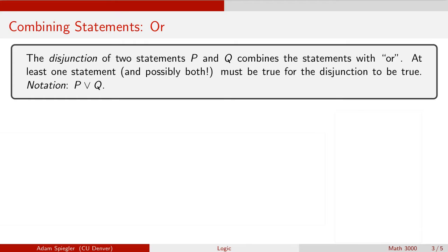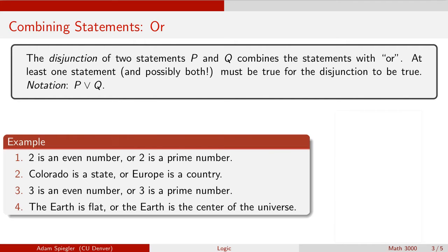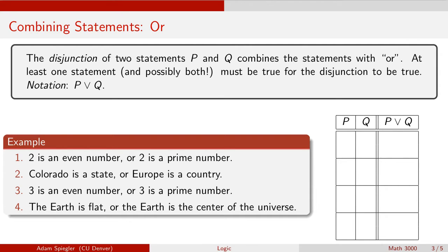Let's take a look at some examples. We'll use truth tables as ways of gauging the overall truth of these joined statements — by this disjunction OR.